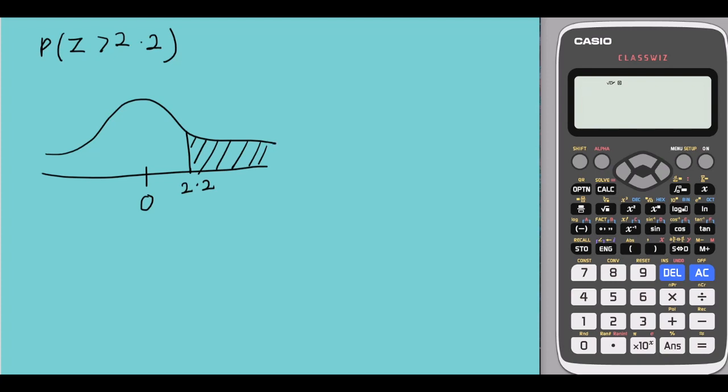Now using this calculator, I would go to menu and select 64 statistics. And then I would press AC. Then I would go to option and scroll down to number 4. We have the normal distribution at number 4 and I'm selecting 4.